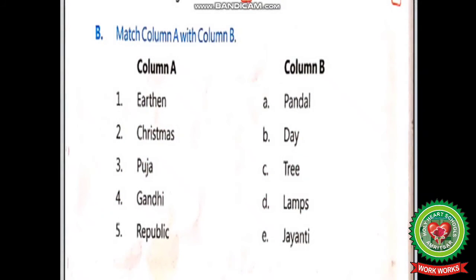Part B — Match Column A with Column B. In Column A: First is Ardhan, Second is Christmas, Third is Puja, Fourth is Gandhi, Fifth is Republic. In Column B: Option A: Pandal, Option B: Day, Option C: Tree, Option D: Lamps, Option E: Jayanti. Think and match Column A with the correct answers from Column B.